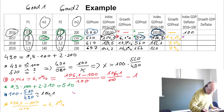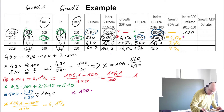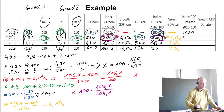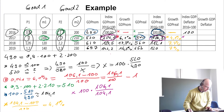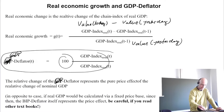In this case, for 2017 we have 100 times nominal GDP index 106.1 over real GDP index 104.1. Going to the definition: it's the nominal index of today divided by the real index of today, multiplied by 100.